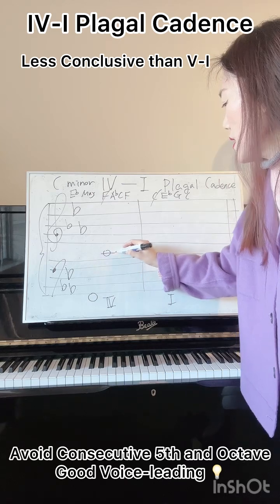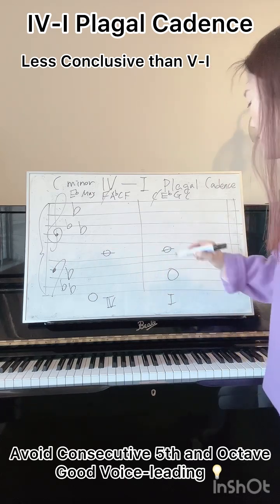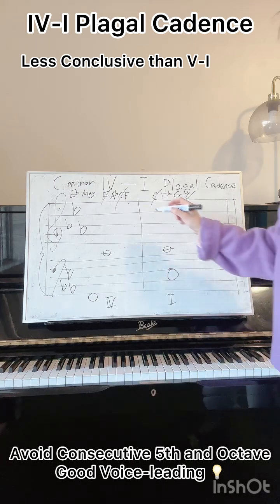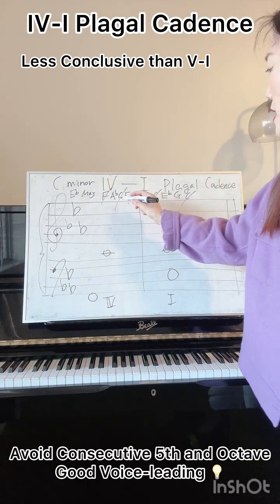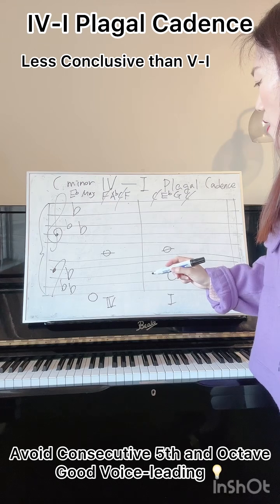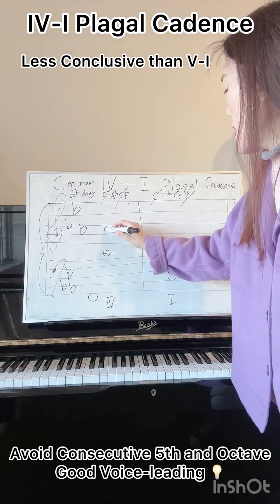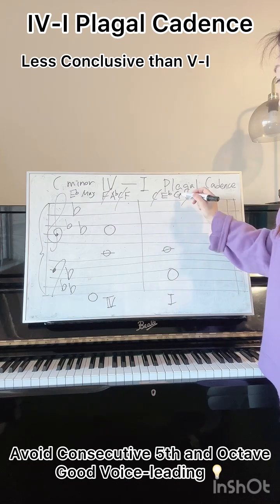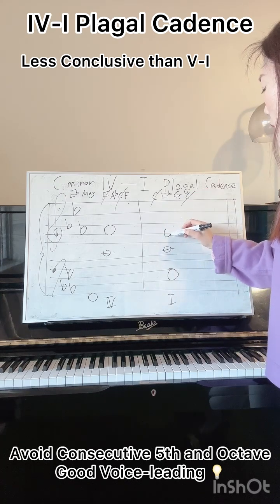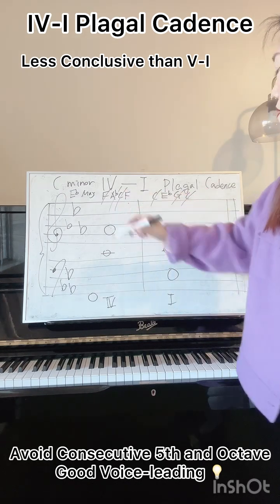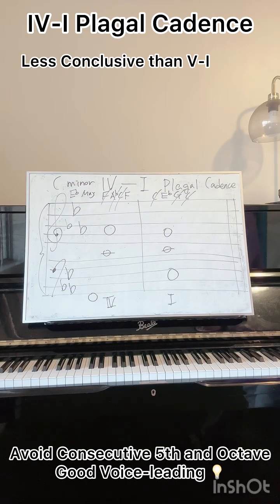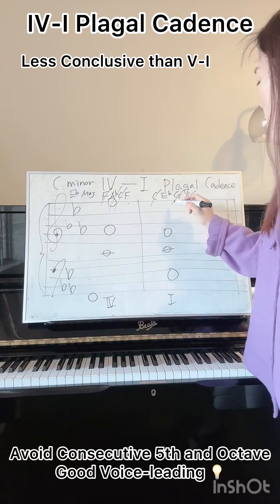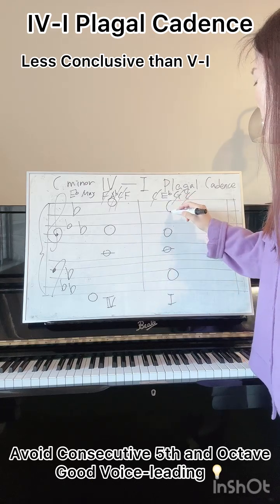I'd like to put the common tone C in the tenor voice. Make sure once you're done, cross that out. Now I'm trying to put A-flat, probably in the alto. And then that is followed by G. So now the remaining voices: F down to E-flat.